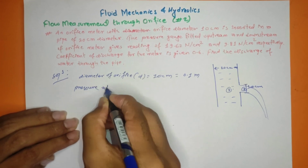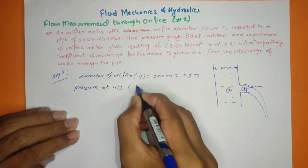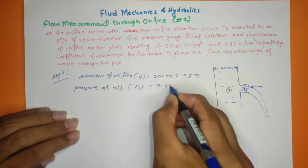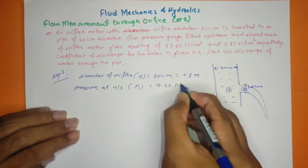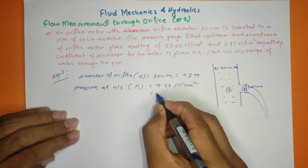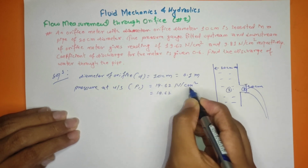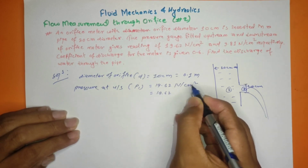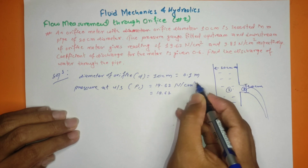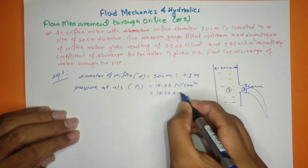Pressure at upstream, P1 = 19.62 N/cm², which equals 19.62 × 10⁴ N/m².